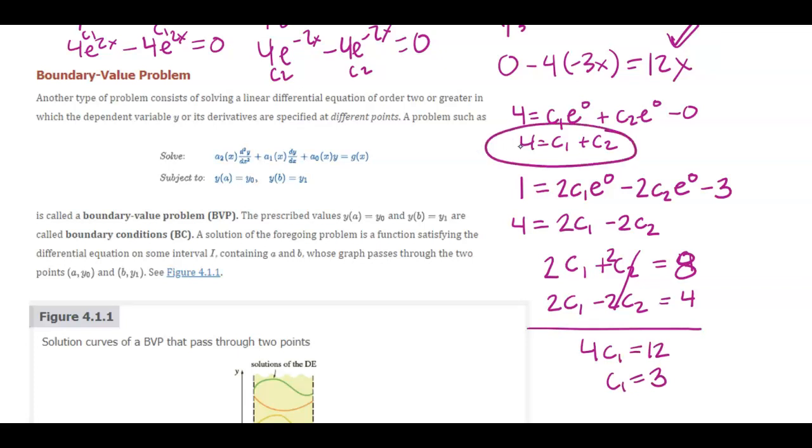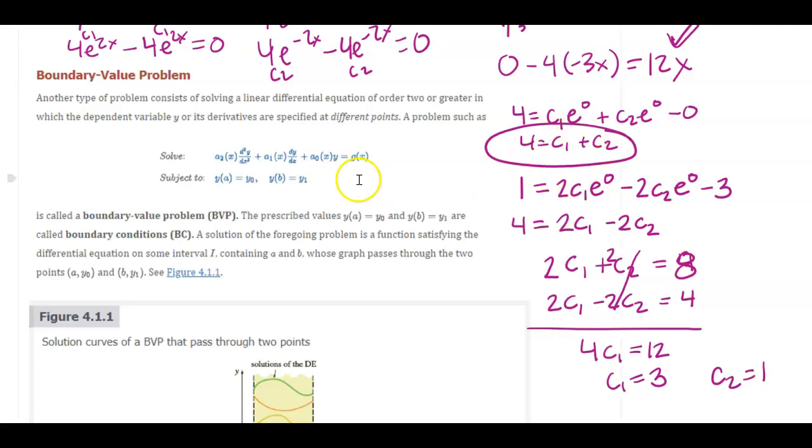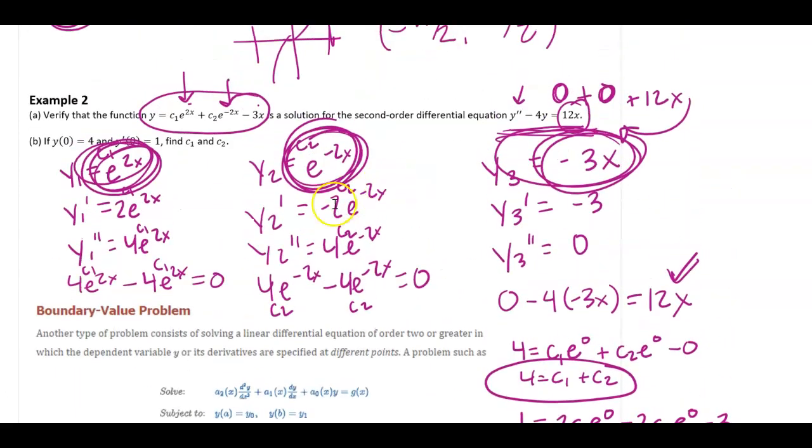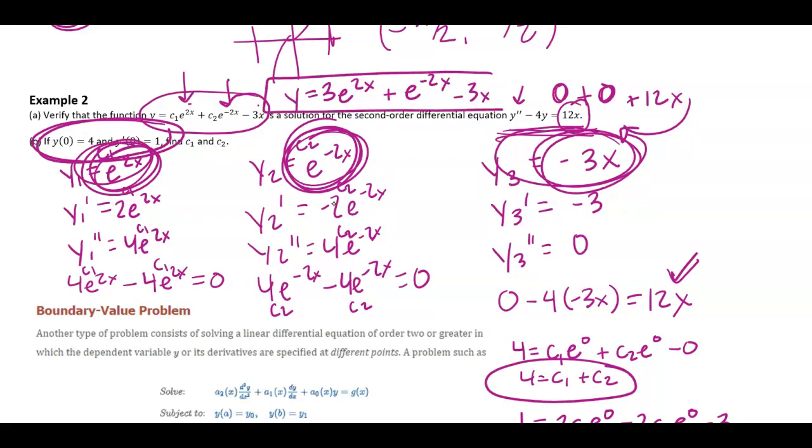And then I'm going to go back up here. Well, if c1 is 3, then c2 must be 1. And so then I could say back up here at the top, if c1 is 3 and c2 is 1, that my solution through these two points, my unique solution, because I'm continuous everywhere, I don't need to really worry about that, would be 3e to the 2x plus e to the negative 2x minus 3x would be my final solution to this differential equation through those points.